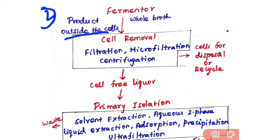For the second type, where the product is outside the cell — present in the liquid phase — you need to recover the product from the liquid phase. The first step is cell removal: you remove the cell mass and collect the liquid for product purification.